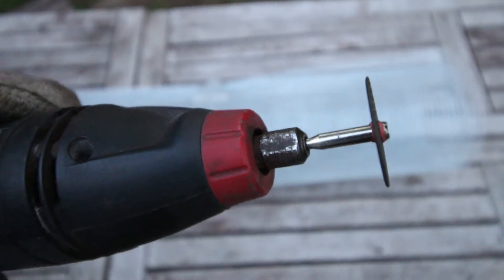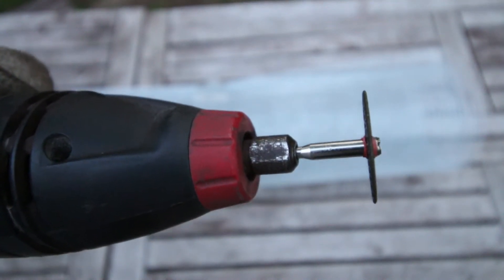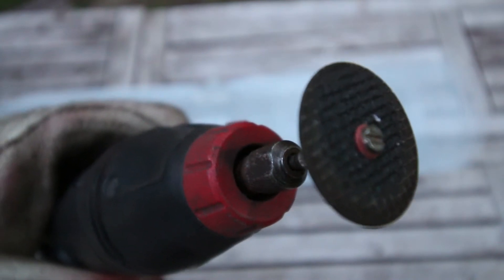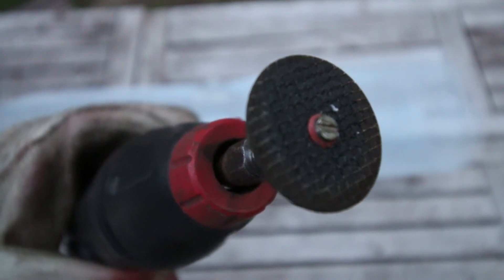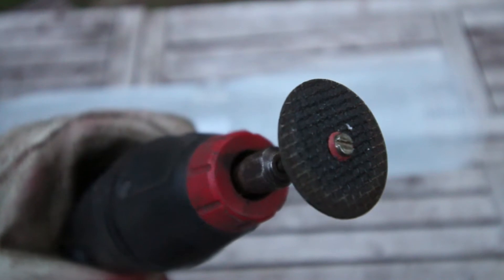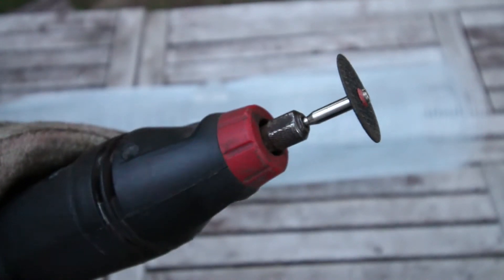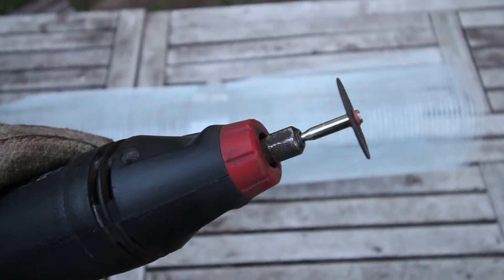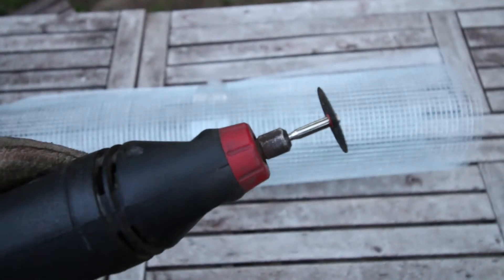See, this is a really thin little disc like this, and it's some sort of grit material. I think it's called a composite. Dremel has them and lots of other companies have them too.